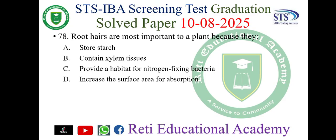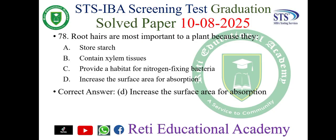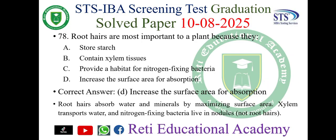Question number 78: Root hairs are most important to a plant because they A) store starch, B) contain xylem tissues, C) provide a habitat for nitrogen-fixing bacteria, D) increase the surface area for absorption. The correct answer is D) increase the surface area for absorption. Root hairs absorb water and minerals by maximizing surface area. Xylem transports water and nitrogen-fixing bacteria live in nodules, not root hairs.